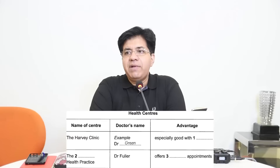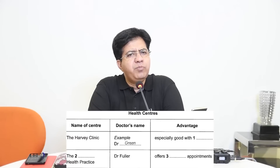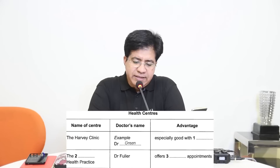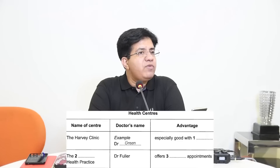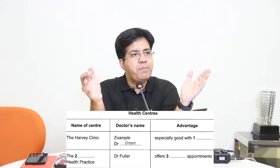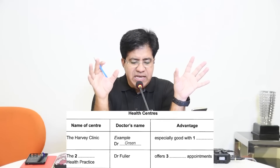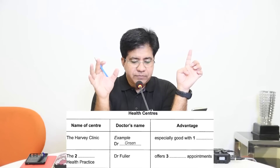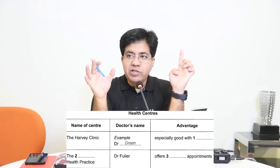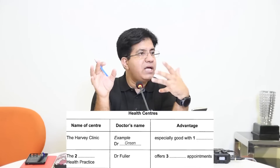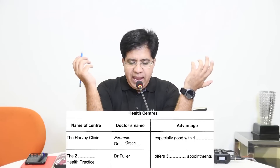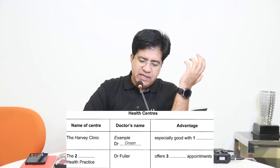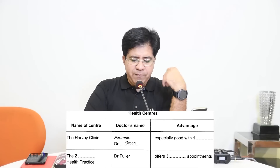The topic is health centers — more like a dispensary or small hospital where you can get treatment. In the table there are always columns: sometimes two, sometimes three, maximum four. The first column is the name of the center — only one question there. Then there is doctor's name, one question — question number four. If the name is unusual, they will spell it for you. The third column is about advantage — two questions.